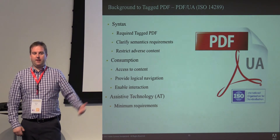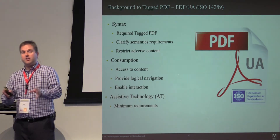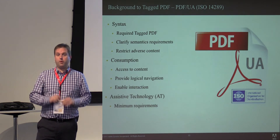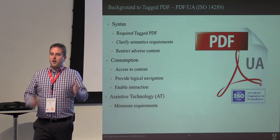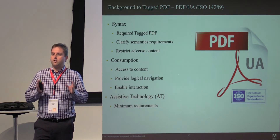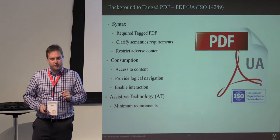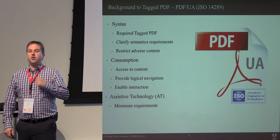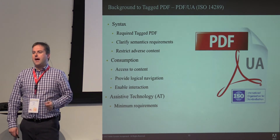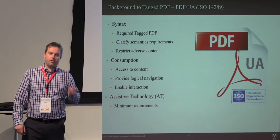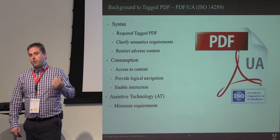PDF-UA requires Tagged PDF. At its heart it's basically saying: thou shalt do Tagged PDF, thou shalt get the semantics right — if you have a list, it shall be a list. ISO 32000 part 1 could produce fully accessible PDFs; PDF-UA adds nothing to 32000 in terms of new capabilities. What it does do is require and restrict things to ensure they are used correctly, so that when we do document interchange with PDF-UA, it is accessible. It also goes beyond the file format to talk about how processors and assistive technology interact with it.